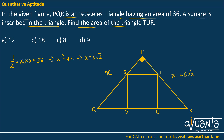Using the Pythagorean theorem, I can find the hypotenuse QR. QR² = x² + x² = 72 + 72 = 144, which gives QR = 12.